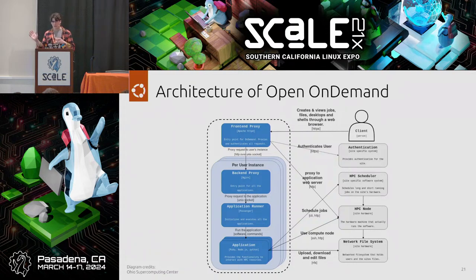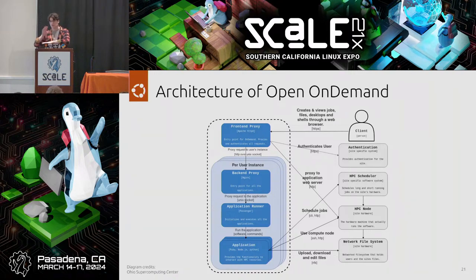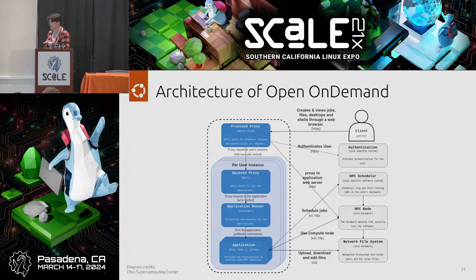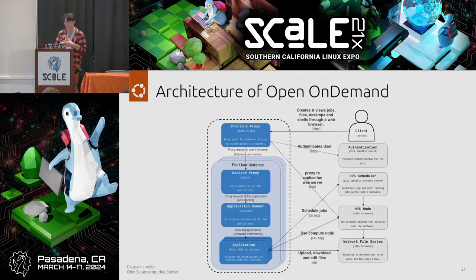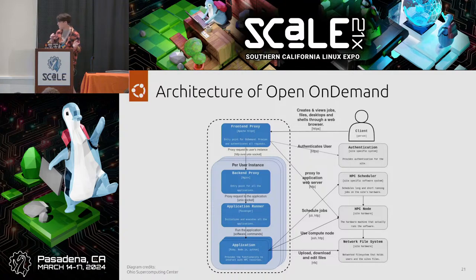Per-user NGINX process — commonly referred to that way by the Open On Demand upstream — is responsible for queuing up user jobs and starting Jupyter, running under that user's namespace so they can't accidentally or maliciously access someone else's data. On stage left: the client, authentication (site-specific identity and access management like LDAP or Active Directory), the HPC scheduler (Slurm), and the nodes or network file system for parallel storage.